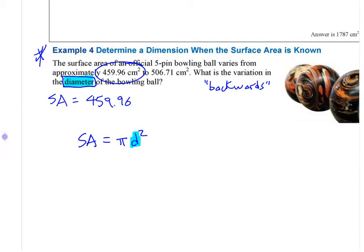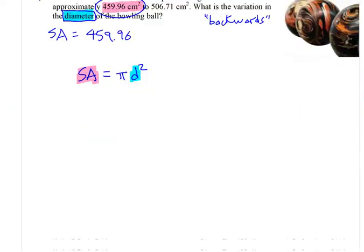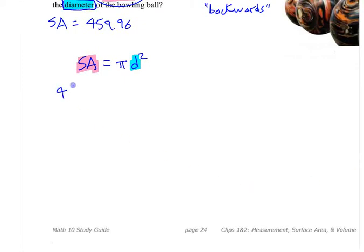You're trying to solve for that, and what you're given is surface area. So you can put it in there. You substitute the ones you know, and then you can solve for the one you don't know. So if you put 459.96, and you say it equals pi times d squared, that's an equation you can solve now.